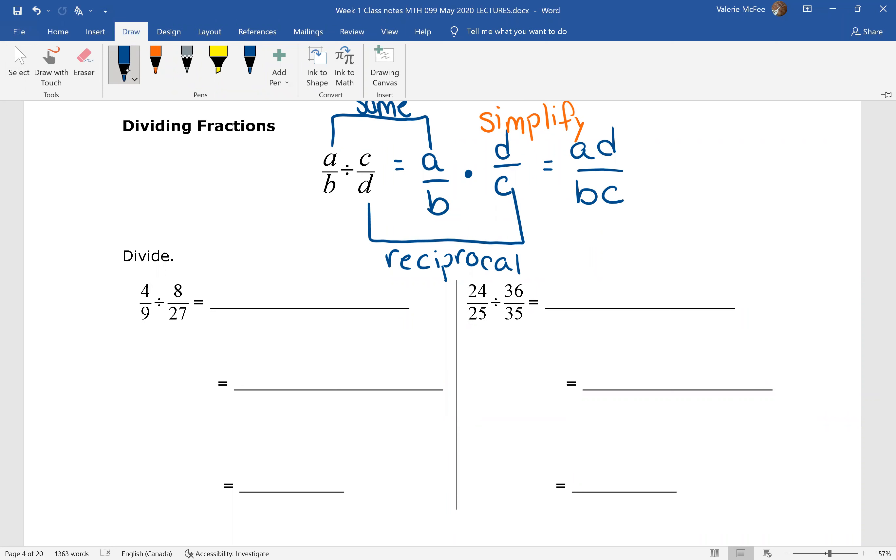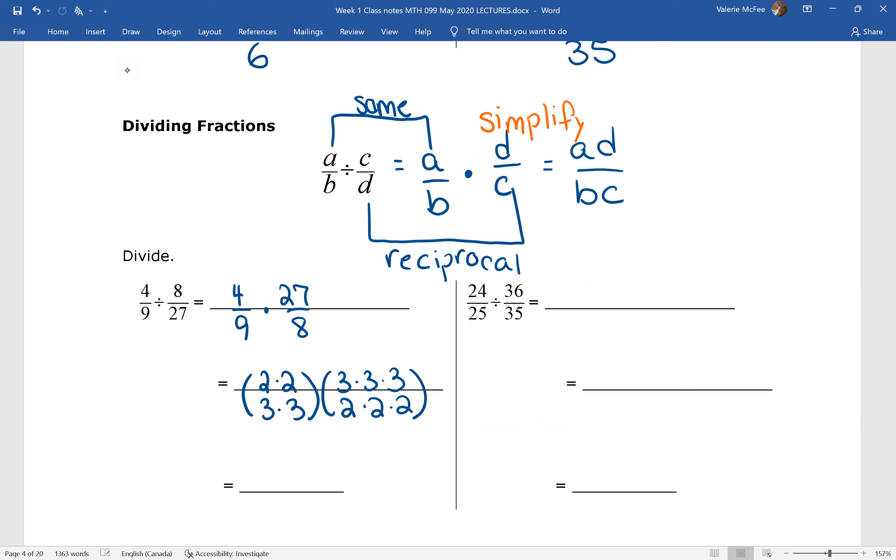Remember that we want to simplify before we multiply. Let's look at this example here. Four over nine stays the same. Dividing changes to multiplication. And now we can prime factor so that we can simplify. Four over nine, 27 over eight. Divide out those common factors.